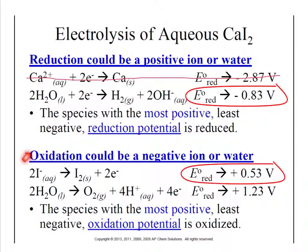Now we've got to look at oxidation — the loss of electrons. Once again, there are two species this can happen to: the iodine losing its negative charge, or the water. We flip both reactions to see the oxidation. If we flip them, the values become negative 0.53 and negative 1.23. We want the higher of the two oxidation potentials, which is going to be negative 0.53 volts.